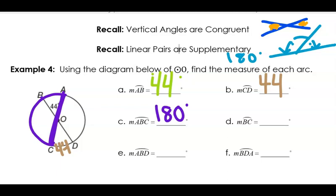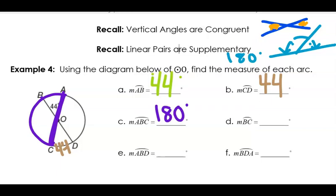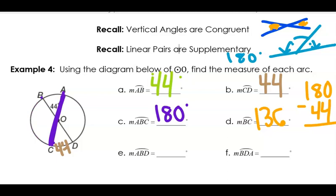Now, if I know that whole thing is 180 degrees and this portion here is 44 degrees, I can just do 180 minus 44 to figure out what this piece is — to find that this is 136. So this piece here is 136 because this piece up here was already 44, and together those two had to add up to 180.